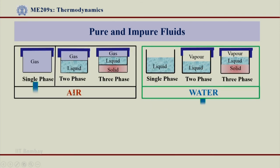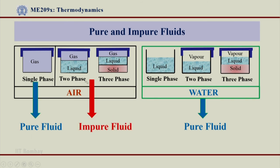To conclude: a single phase of air is a pure fluid, while single phase, two phase, and three phases of water are all pure fluids. Two-phase or multi-phase mixtures of air will not constitute a pure fluid — they will be impure fluids. Water, whether it is single phase, two phase, or three phase, will always be termed a pure fluid. That is a very important advantage of taking water as a working fluid — whatever the phase, I am always studying a pure fluid. Thank you.